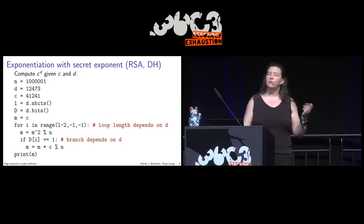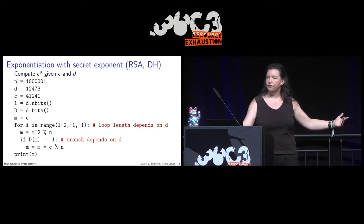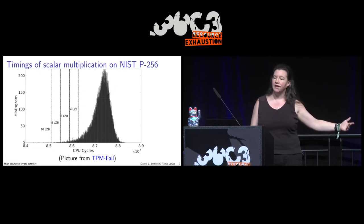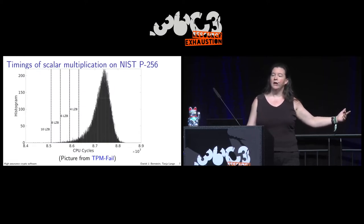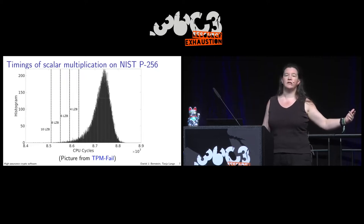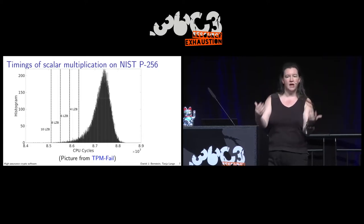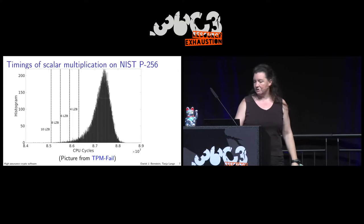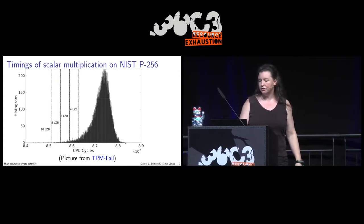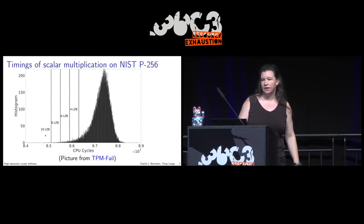If you're a remote attacker, you only see overall time. This is from TPM Fail — a visualization showing timing of P256 elliptic curve computations. You can see the bulk of the computation takes a certain time, but if you have some leading zero bits, it's much faster.